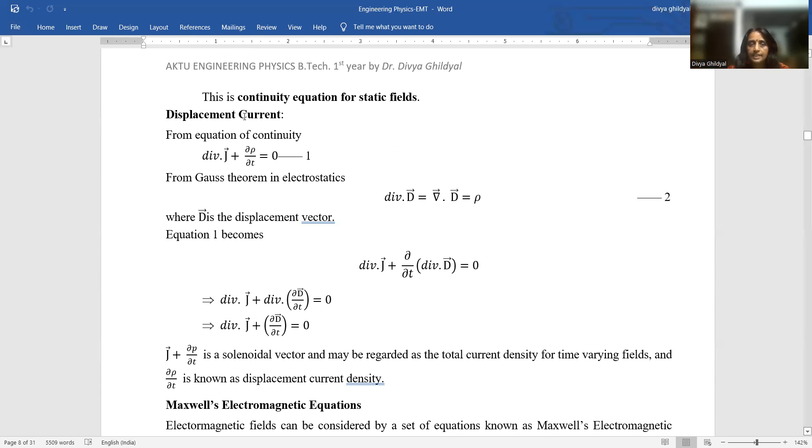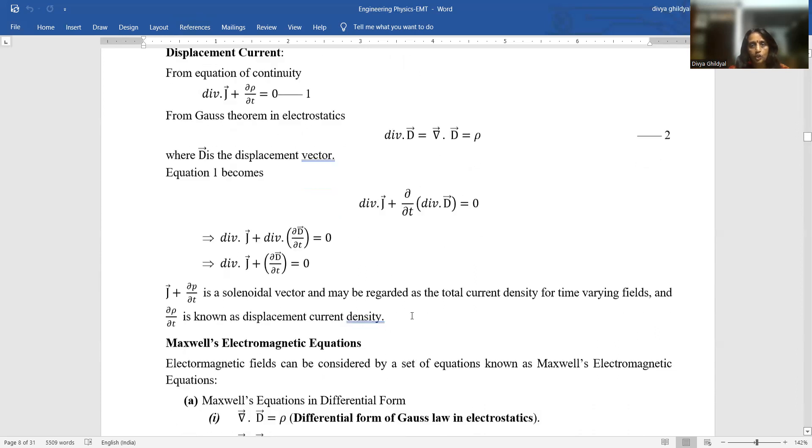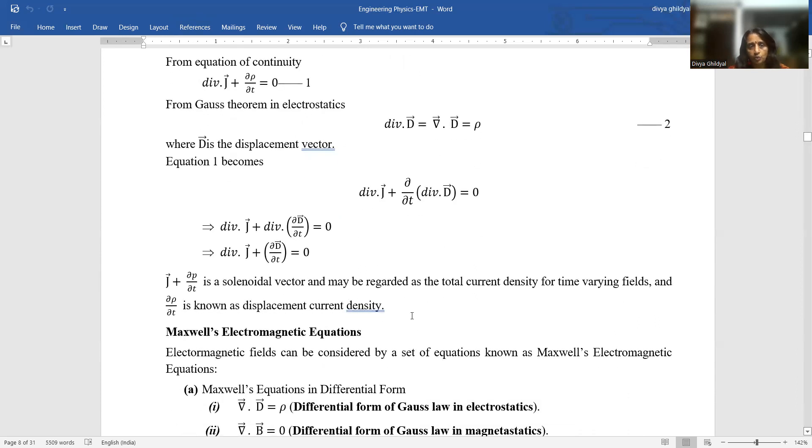Second, displacement current arises when the charges are in motion. They give rise to the displacement vector which is divergence D equal to rho, where rho is the charges. So all this EMT is directly related to charges and their flow. So displacement current is related directly to the flow of charges. So this is not equal to charge and it is given by rate of flow, del rho by del T. How much these charges are flowing in the system.